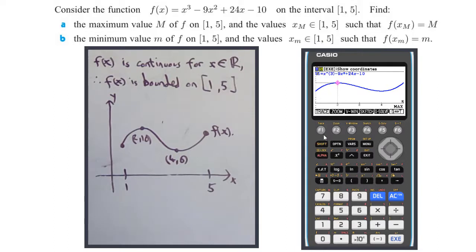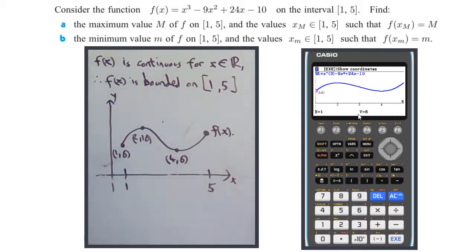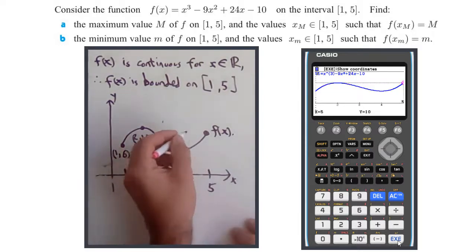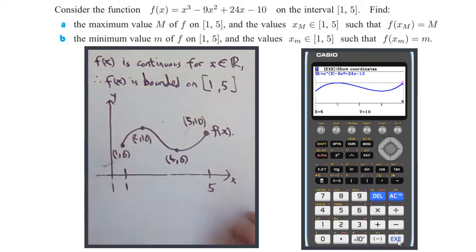We're interested in the global values. For f(1), use trace and put in x = 1. It gives y = 6, so the point (1, 6). For f(5), put in 5, and y = 10, so (5, 10).